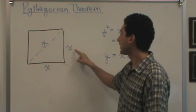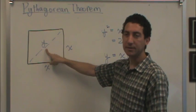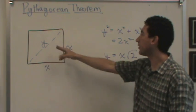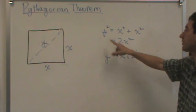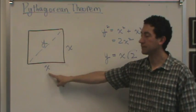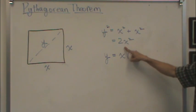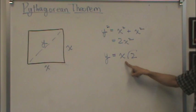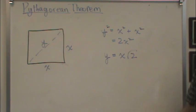Say I have a box, and the length of each side is x, and we have a diagonal y, and I want to know y in terms of x. I can use Pythagorean's Theorem where y squared equals x squared plus x squared — the sum of each of the sides. In this case, that's 2x squared, so take the square root of y, and the square root of 2x squared gives y equals x root 2.